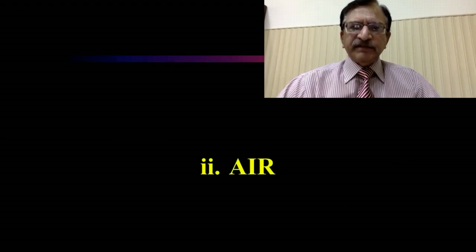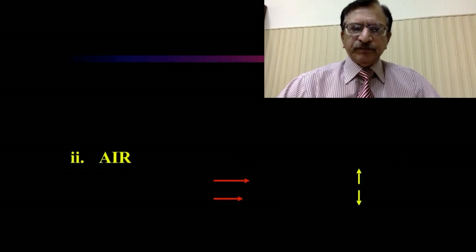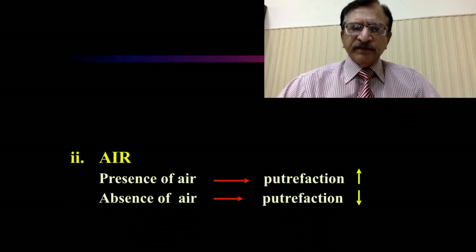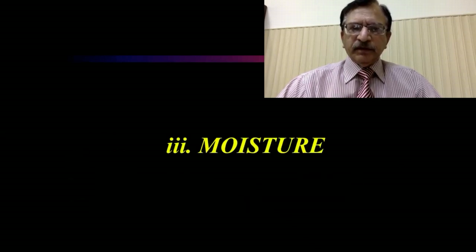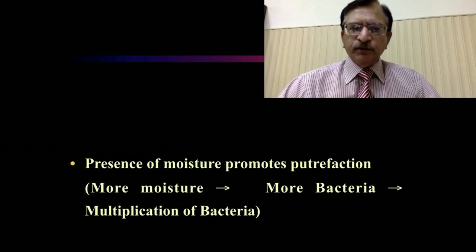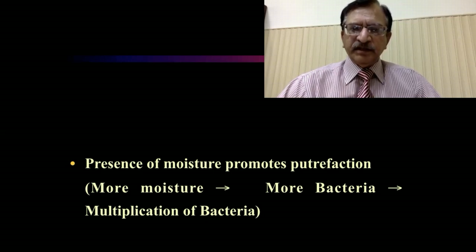Temperature of the water medium is also important. Presence of air increases the rate of putrefaction, whereas absence of air or good movement of air will retard or slow down the process of putrefaction. Moisture in the environment also promotes putrefaction — when the environment is more moist, more bacteria will be present, multiplication of bacteria will be favorable, and putrefaction will be more rapid.